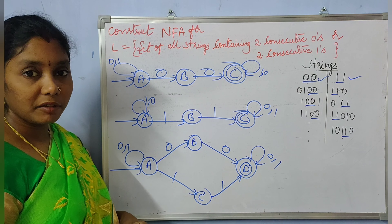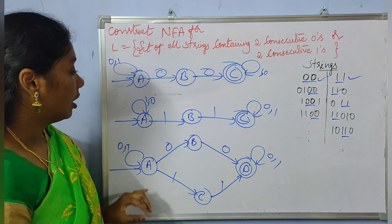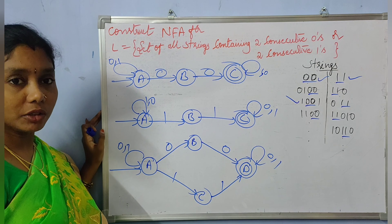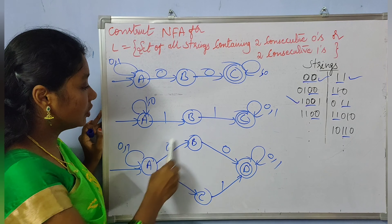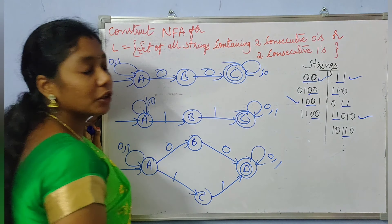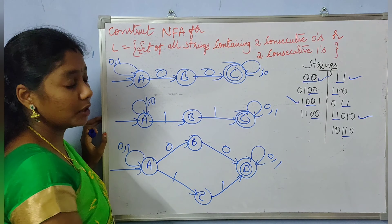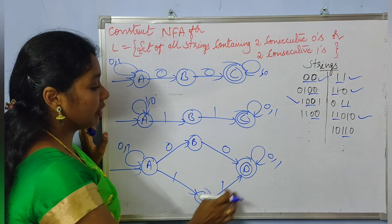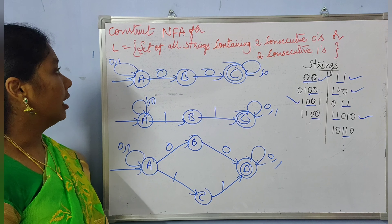This is the required NFA for the given problem. Let us cross-check whether it accepts the expected strings. Consider '1001' — it is accepted. Let us check '11010' — it is also accepted. And '110' — it is also accepted. This NFA accepts all strings under the given language. Thank you for watching the video.